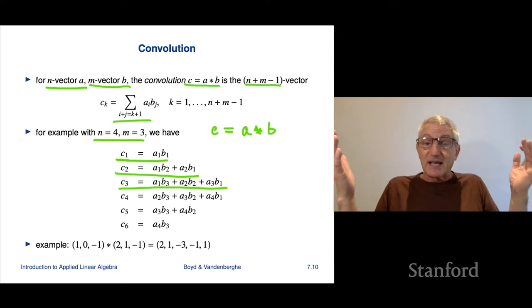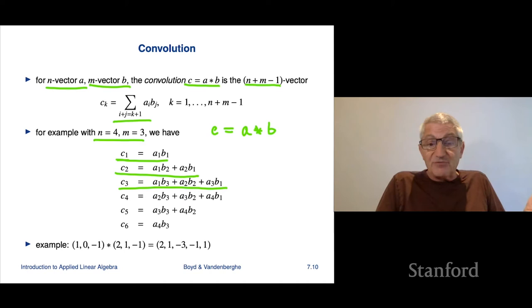c2 is all of the products of ai and bj, for which i plus j adds up to 3. And there's two ways to do that. There's 1 plus 2, and there's 2 plus 1. And there you go. These are the two entries. It's a1, b2 plus a2, b1. c3, that's going to be all the ways. It's the sum of the products of the entries ai, bj, where i plus j adds up to 4. And the ways to do that are 1, 3, 2, 2, and 3, 1. And so on. So at this point, you might be saying like, well, this is crazy, this is complicated. It is complicated. But in fact, you'll get used to it and it'll actually have a meaning for you.